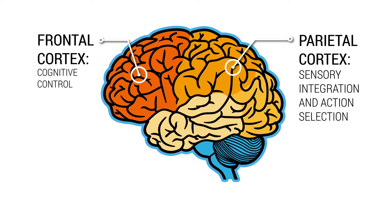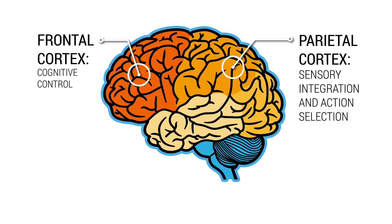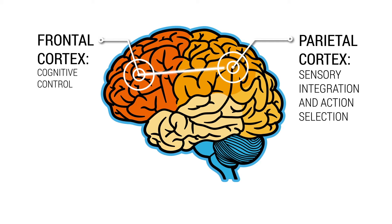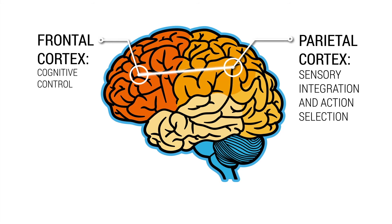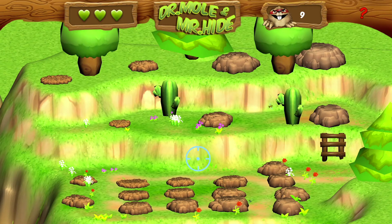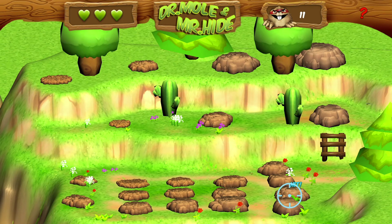As you work on improving fast and accurate shifts of attention, you are engaging different parts of the brain including the frontal and parietal regions. Identifying the bandit moles with your peripheral vision and looking at them quickly helps to strengthen the connections between these regions of the brain, which makes it easier to make fast and accurate eye movements and shifts of attention.